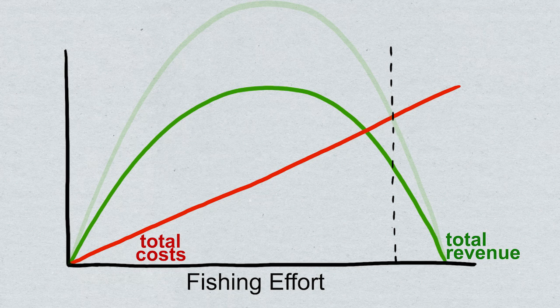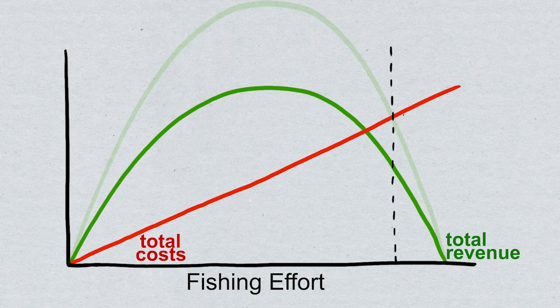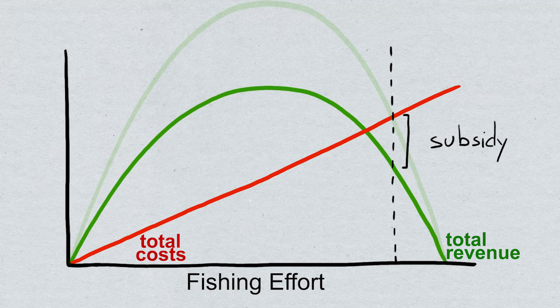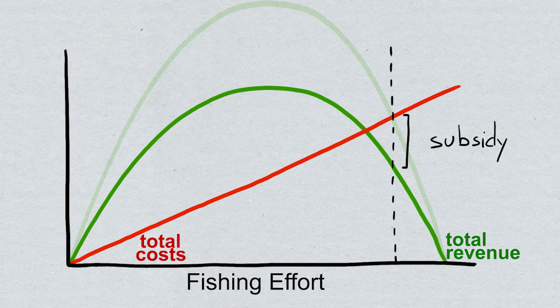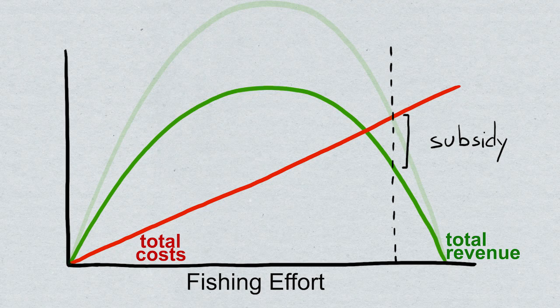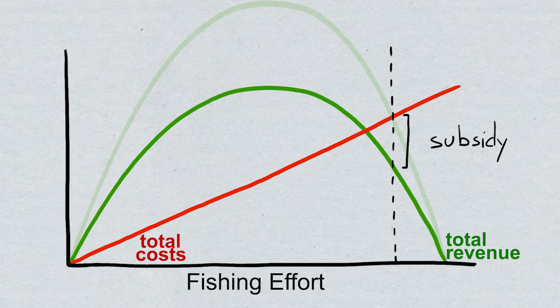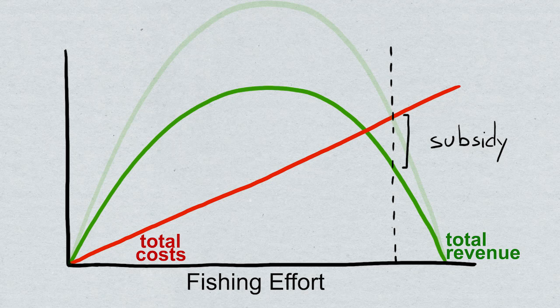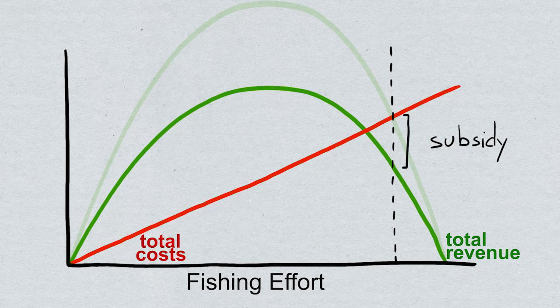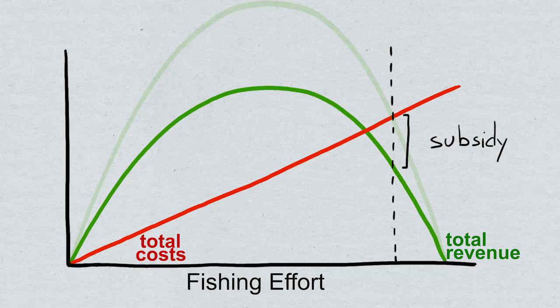On a theoretical level like this, we can model the increase in effort due to the subsidy. This distance here would represent the amount of the subsidy. But in the real world, it's very difficult to actually measure how much extra fishing effort is going on for each dollar of government subsidies. But we can see that failing fisheries are often accompanied by government subsidies.